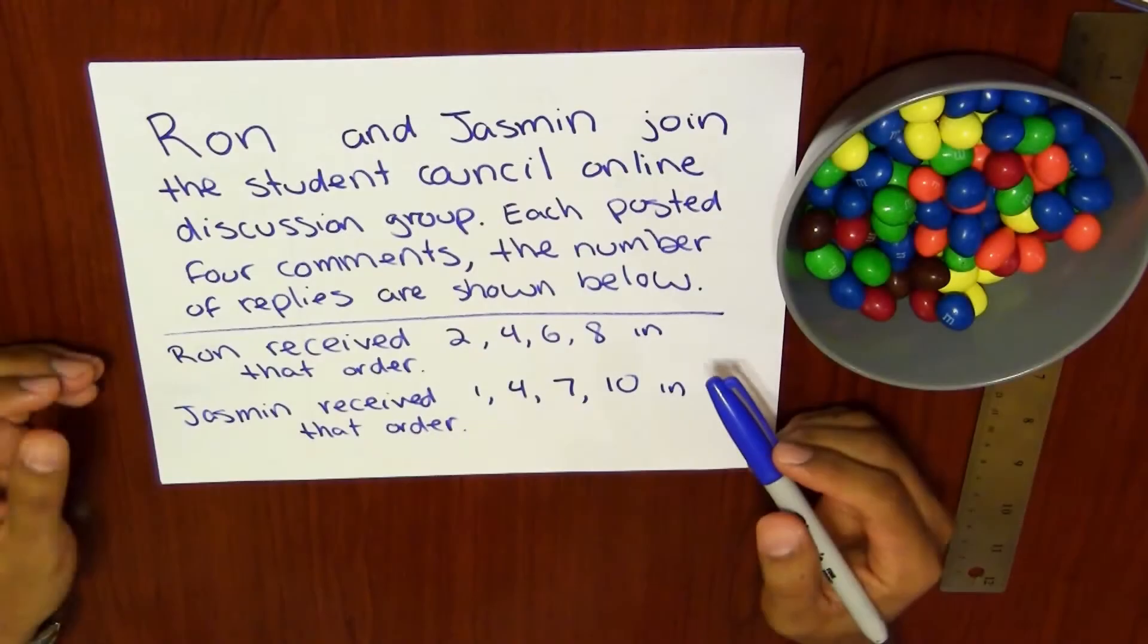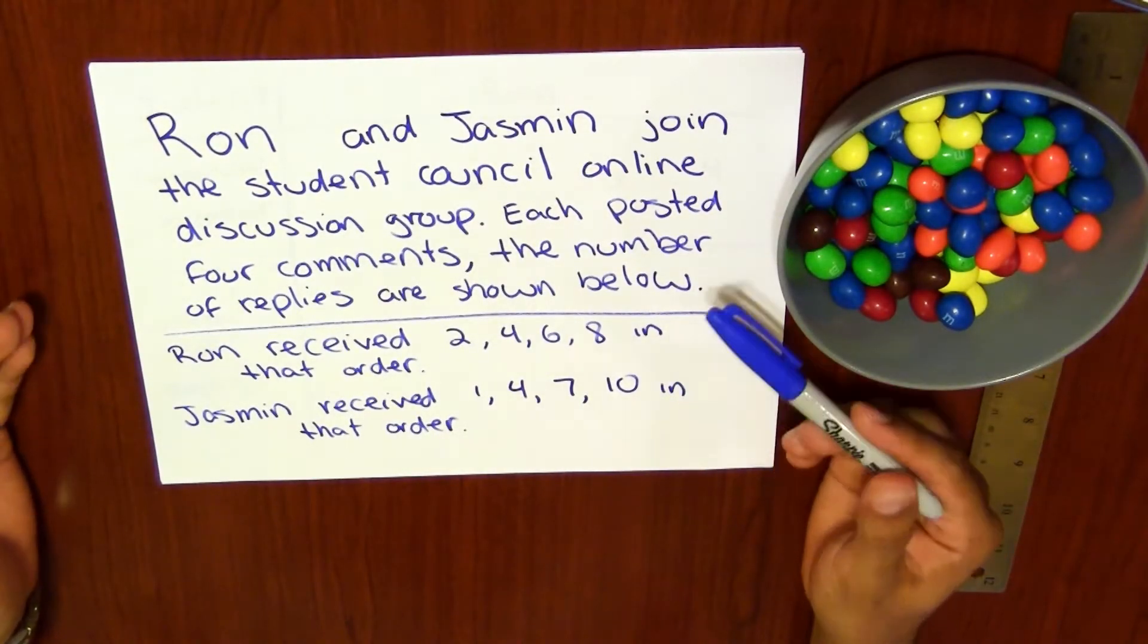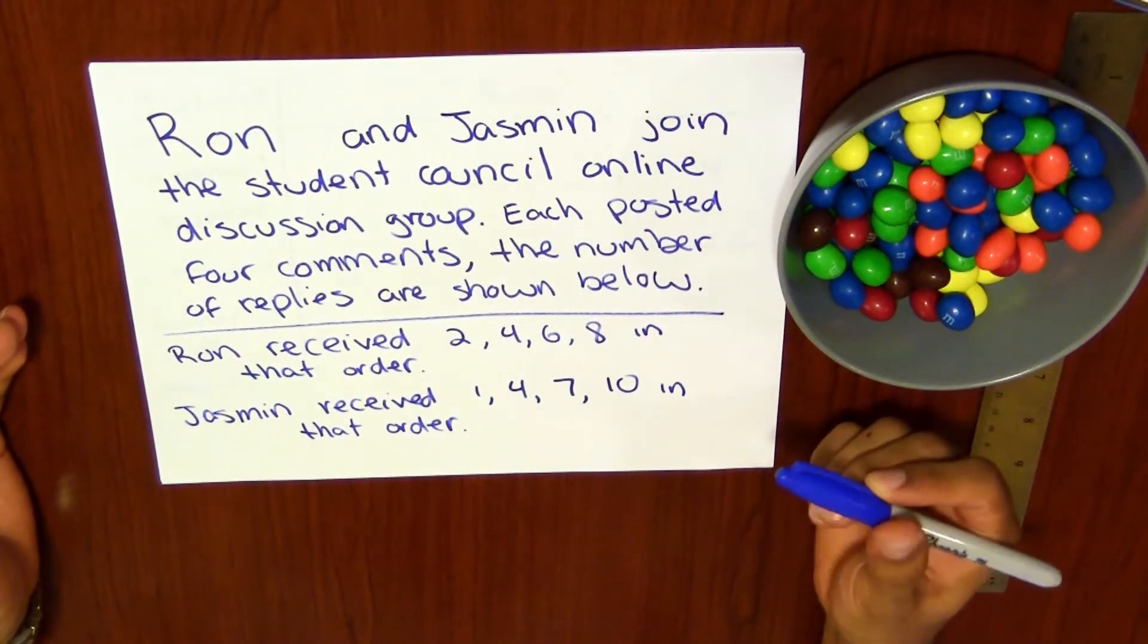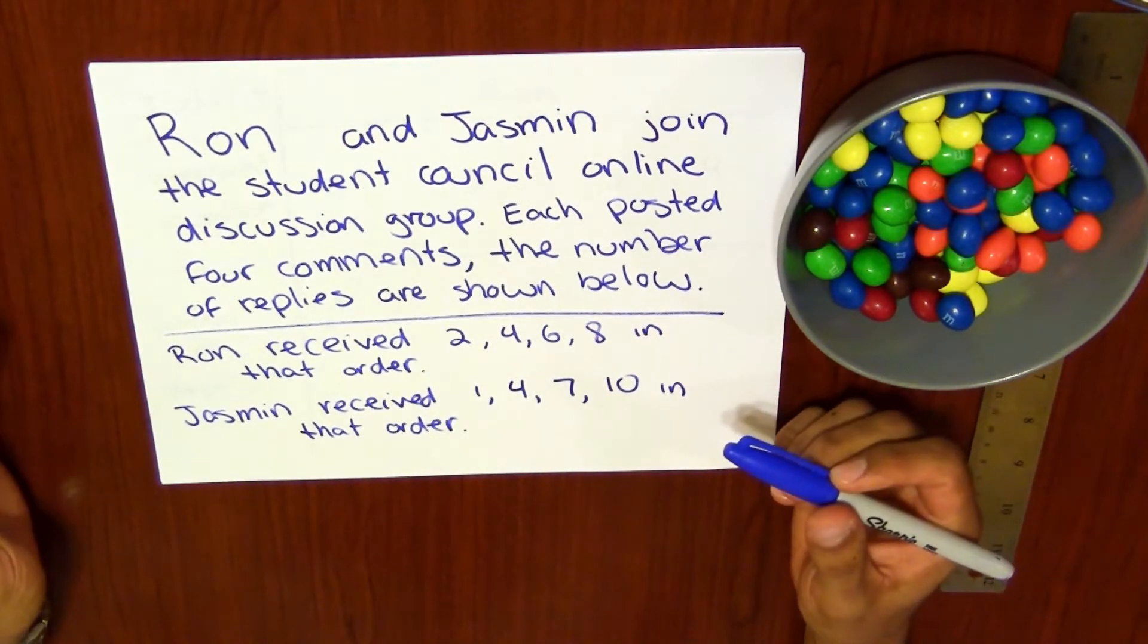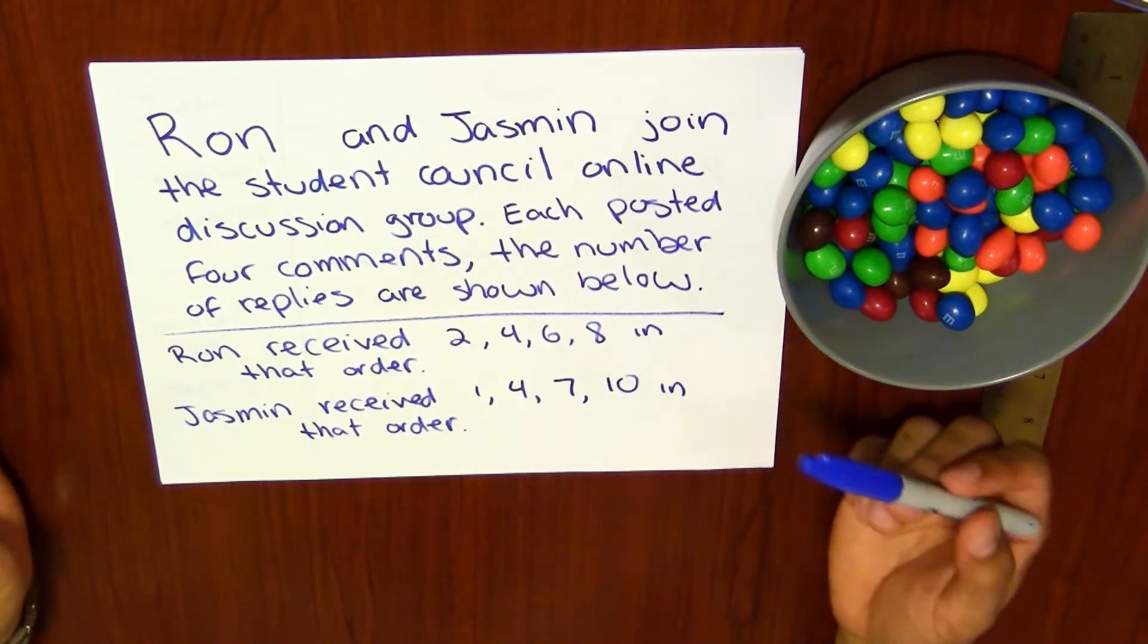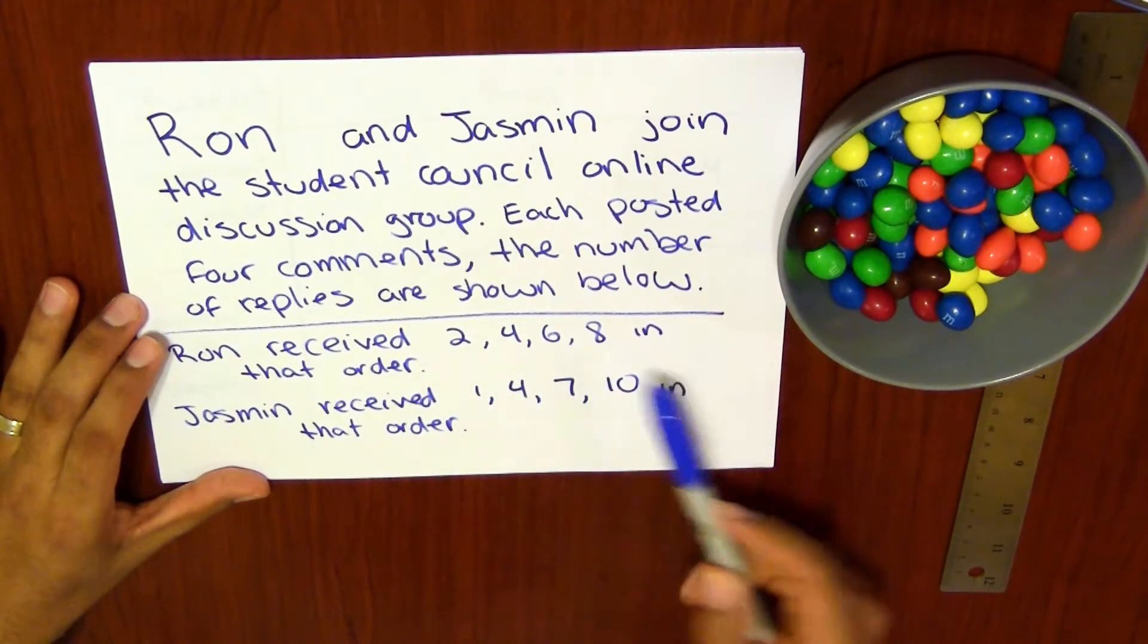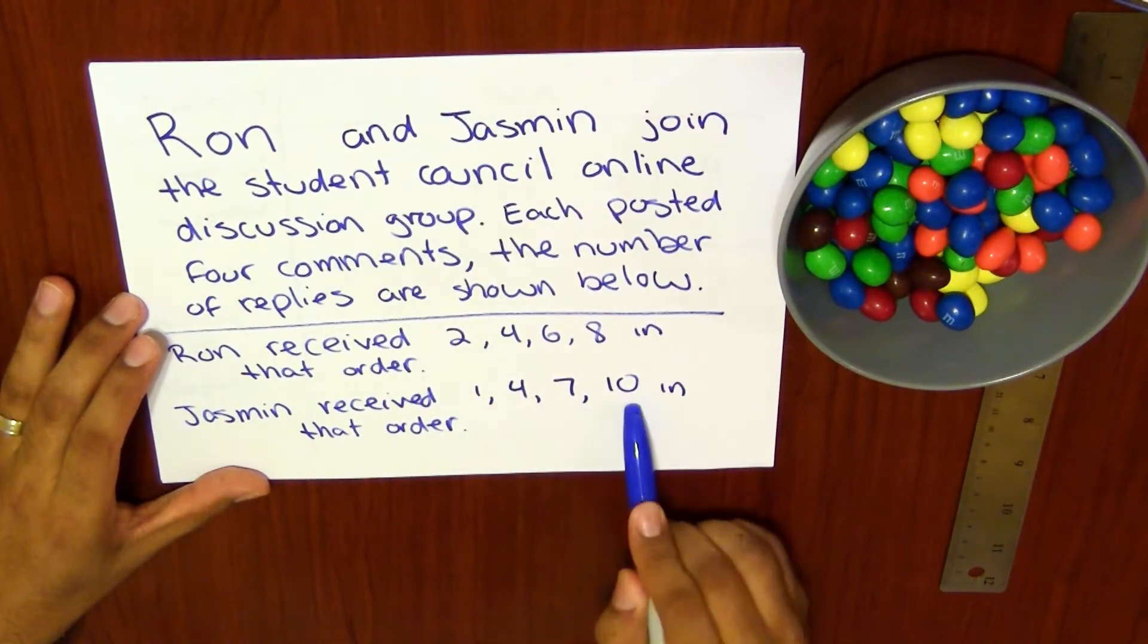Alrighty, so this is our scenario here. We have that Ron and Jasmine joined the student council online discussion group and each posted four comments. The number of replies are shown below. So here we have that Ron on his first comment got two replies, then four, then six, and eight. And Jasmine got one, four, seven, and ten.